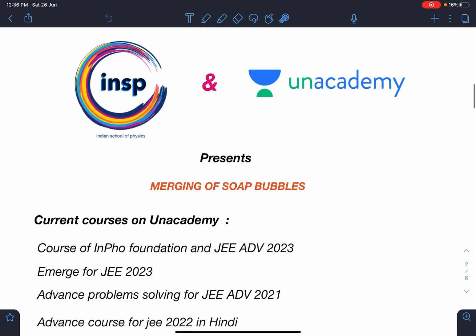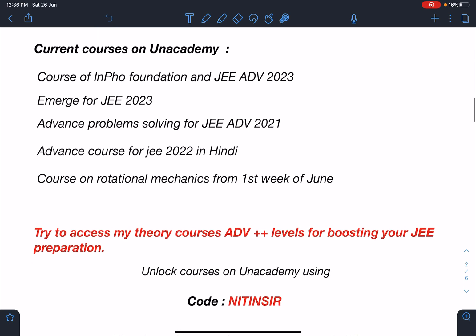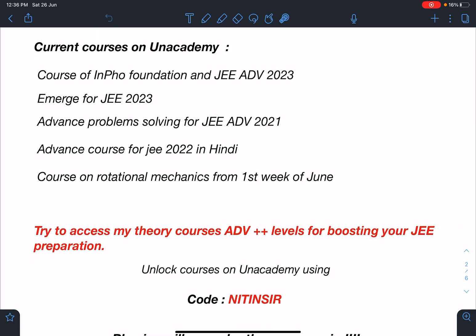The name of this problem is merging of soap bubbles. My current courses on Unacademy are courses of IIT-JEE Foundation and for JEE Advanced 2023, and its next phase will be starting in the first week of July from work, power, energy and circular motion. Another batch for JEE 2023 is Emerge batch where we will be starting kinematics. There is another course on advanced problems for JEE Advanced 2021, and you can join advanced course of JEE 2022 in Hindi. Currently we are doing current electricity and in the next phase magnetism will be starting. Next is a course on rotational mechanics and it is already going on, it is midway.